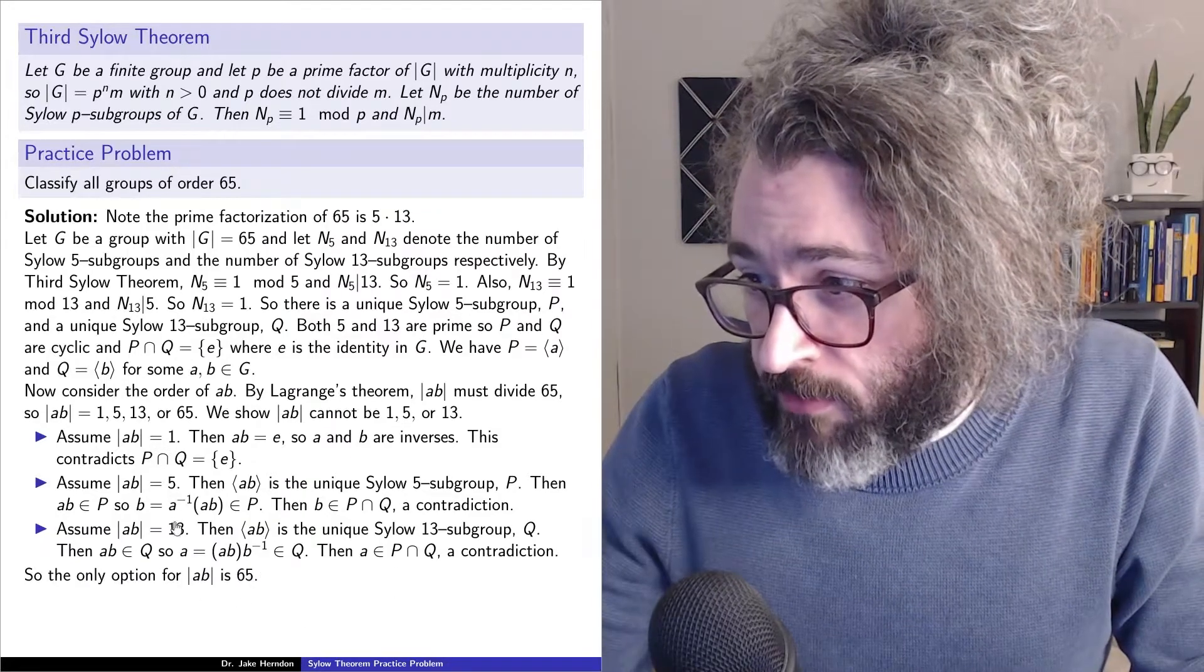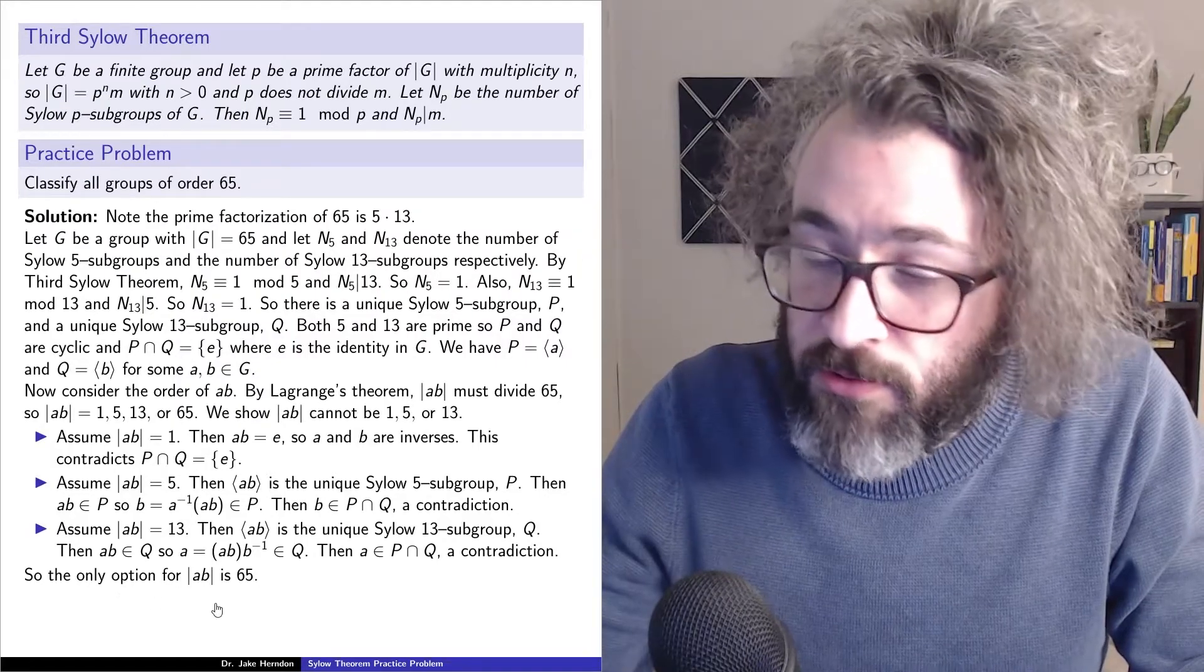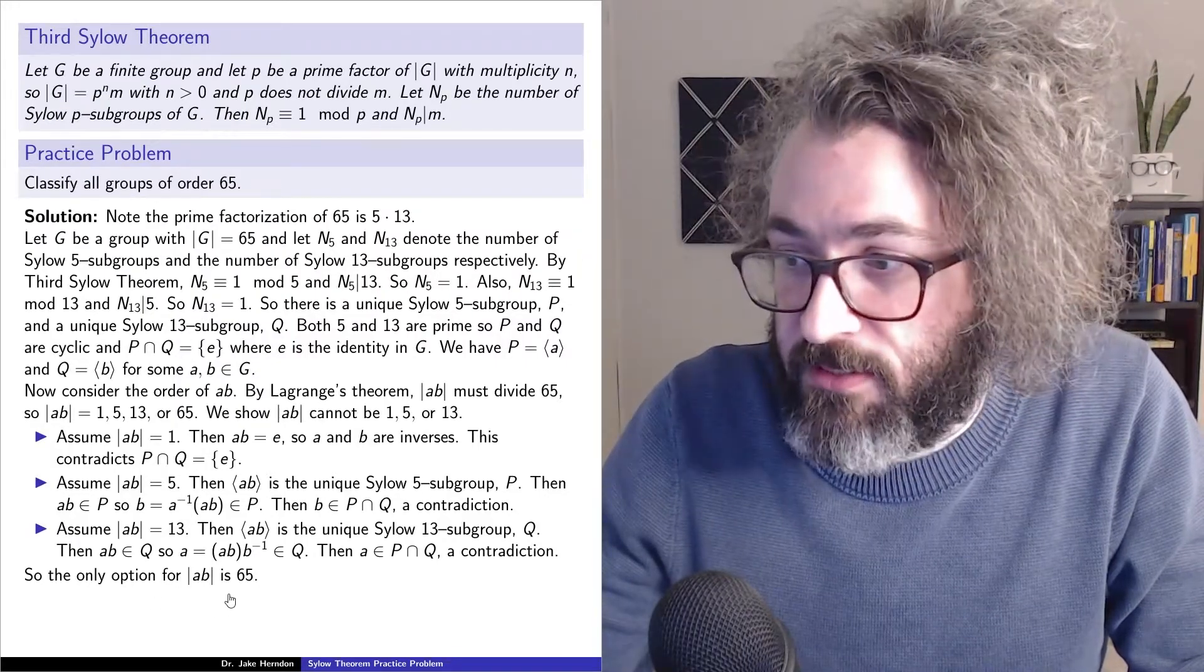So in any one of these cases, we get a contradiction. So the only option for the order of a times b is 65.